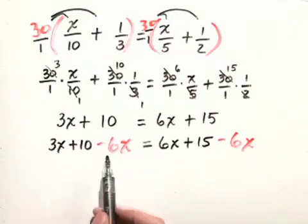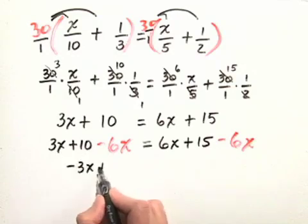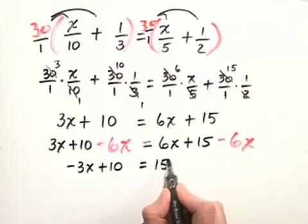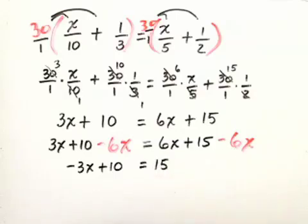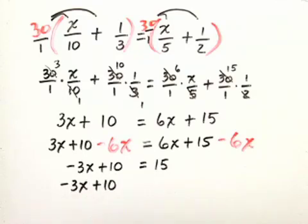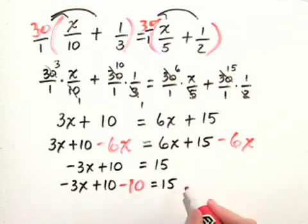Let's simplify that. 3x minus 6x is negative 3x plus 10 equals, on the right-hand side, we just have 15 because 6x minus 6x adds up to 0. Let's now subtract 10 from both sides to move the constants over to the right. Negative 3x plus 10 minus 10 equals 15, minus 10.